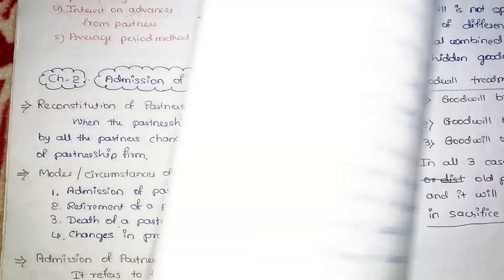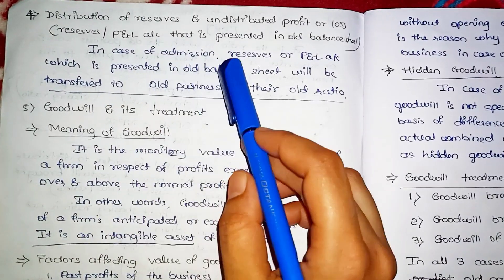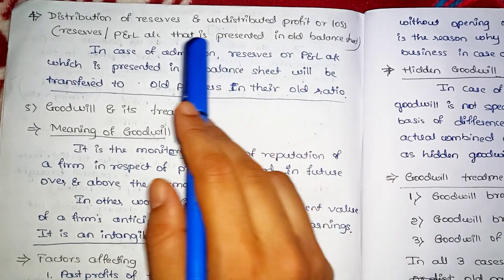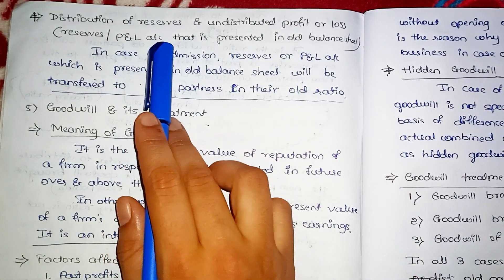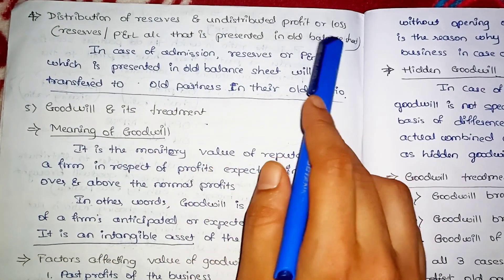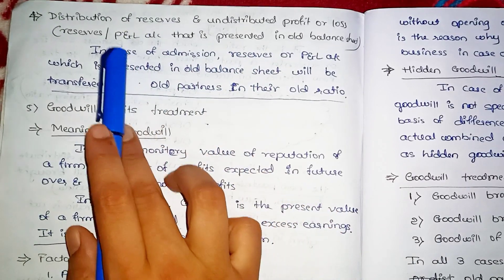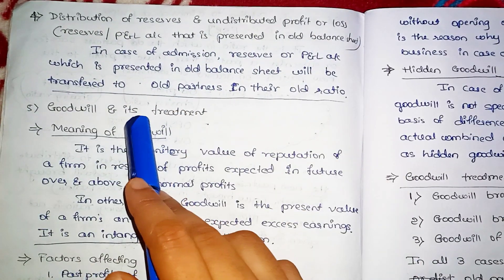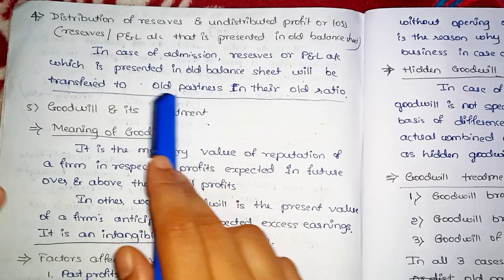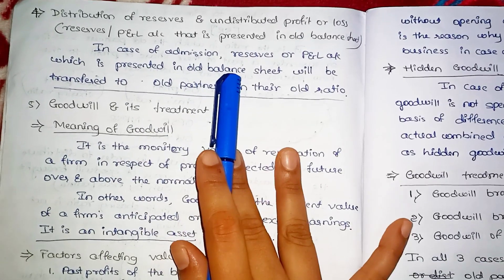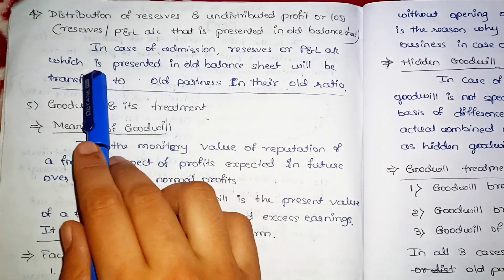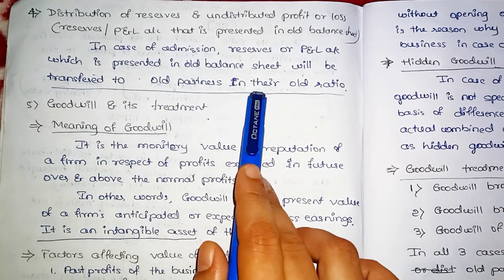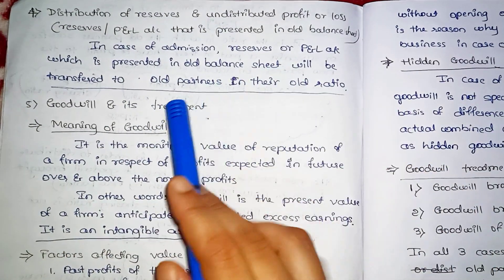Next topic is Distribution of Reserves and Undistributed Profit or Losses in case of Admission. Reserves or Profit and Loss Account that is present in the old Balance Sheet - such as P&L Account balance, General Reserves, and Reserve Fund - are shared among old partners in the old ratio. These are transferred to Old Partners' Capital Accounts in the old ratio.